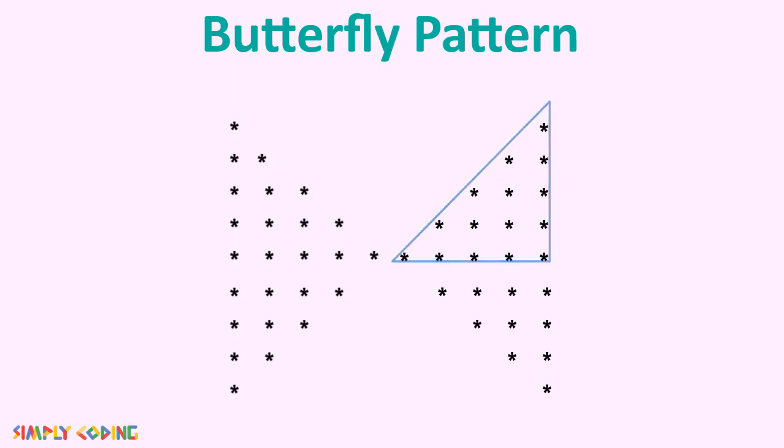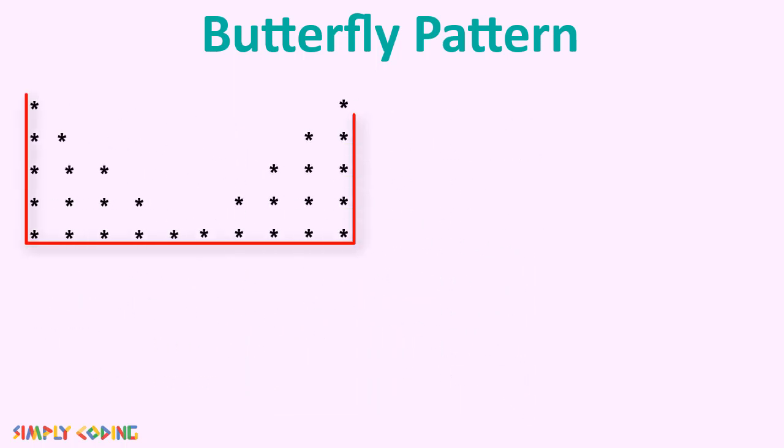On the bottom side, we have a decreasing triangle of stars and then two triangles of increasing space and then again one decreasing triangle of stars. So let's start with the top half.